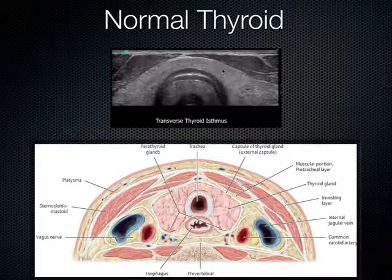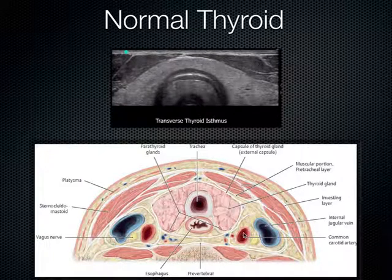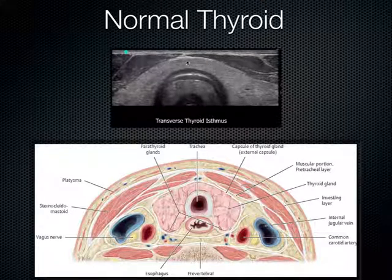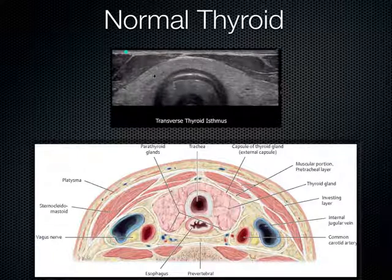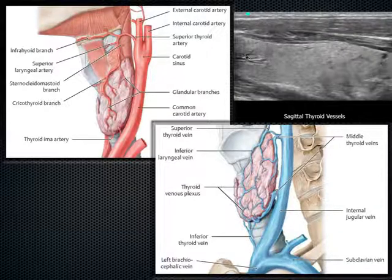For the thyroid, place the probe in a transverse plane. The thyroid has a right lobe, isthmus, and left lobe, located medial to the carotid arteries and just posterior to the neck muscles. It should have a very nice isoechoic, somewhat hyperechoic texture — similar in glandular appearance to testicle tissue. In the sagittal view, you can see vasculature passing through it.